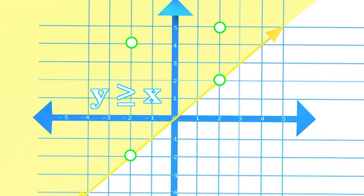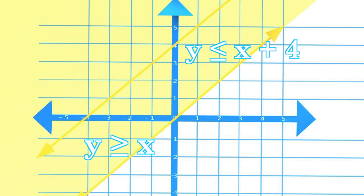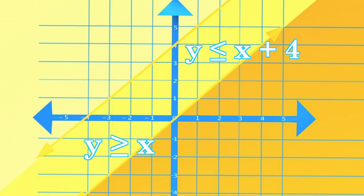Now let's add to the graph the line y is less than or equal to x plus 4. Now we need to shade the region below the line a new color to represent all the coordinates which have a y coordinate smaller than the value on the line y equals x plus 4.